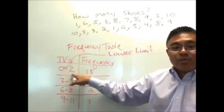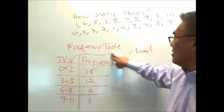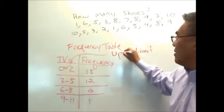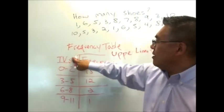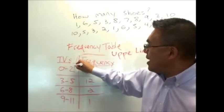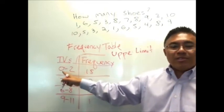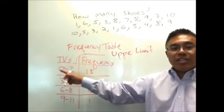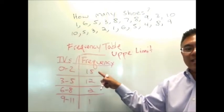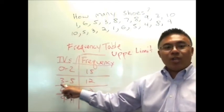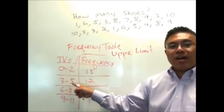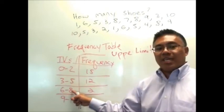The second number is referred to as the upper limit. That number. This number is the upper limit. So the lower limit's at zero. Upper limit's at two for this first class. The second class, the lower limit is three. Upper limit is five. Lower limit's six. Upper limit's eight.